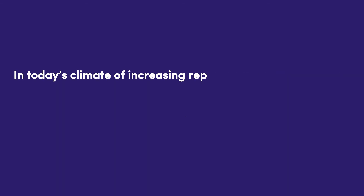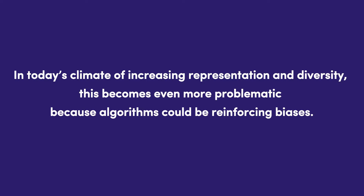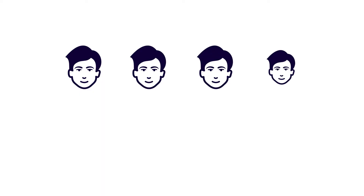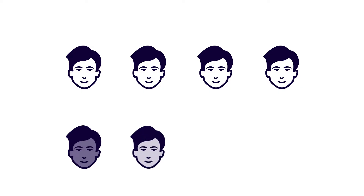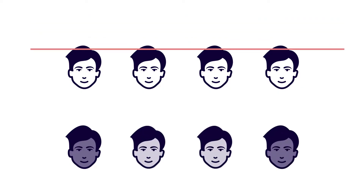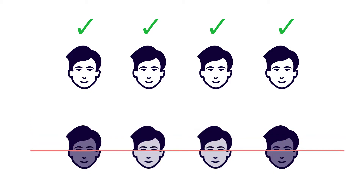In today's climate of increasing representation and diversity, this becomes even more problematic because algorithms could be reinforcing biases. For example, a facial recognition algorithm could be trained to recognize a white person more easily than a black person because that type of data has been used in training more often. This can negatively affect people from minority groups, as discrimination hinders equal opportunity and perpetuates oppression.